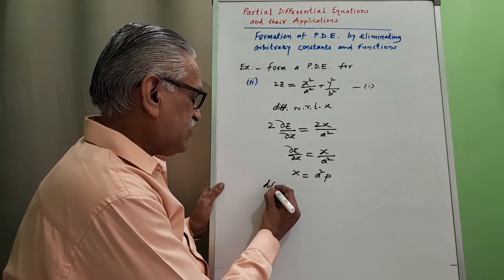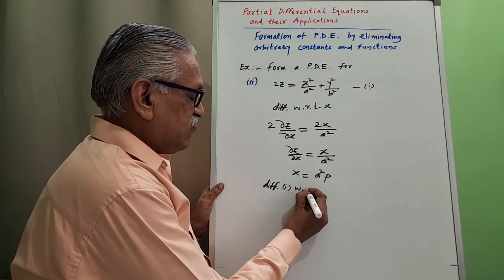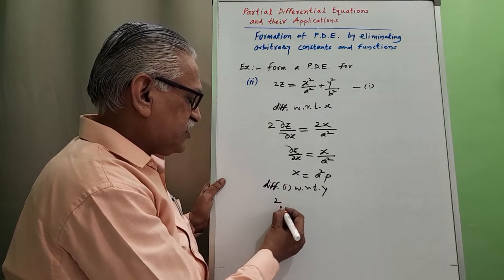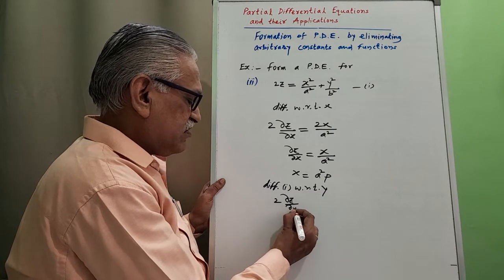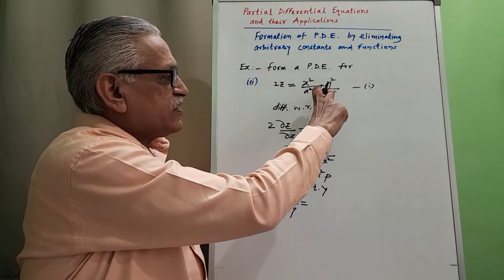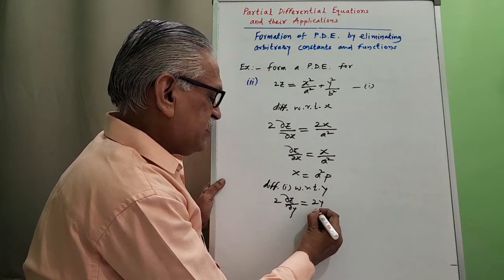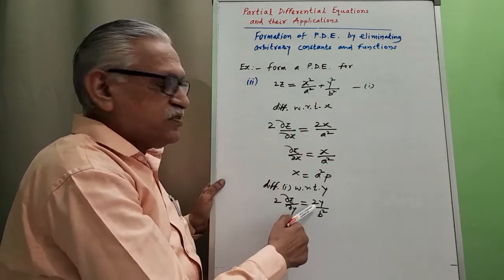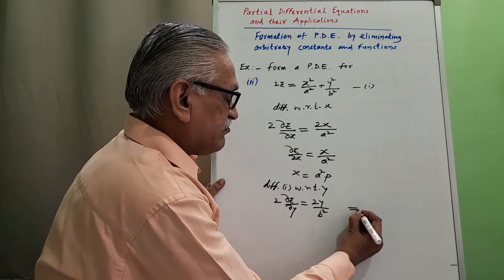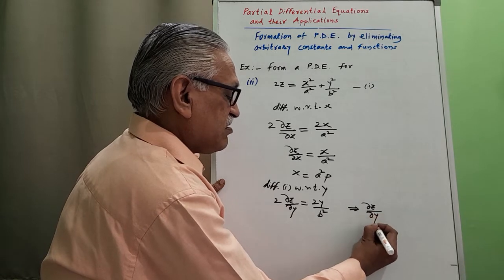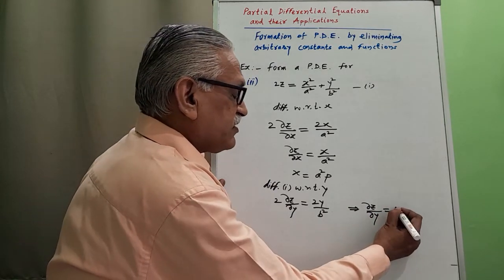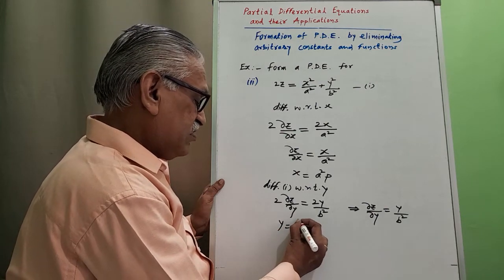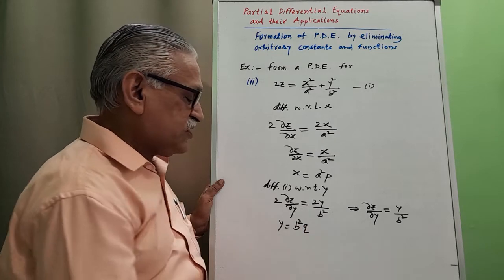Then differentiating equation 1 with respect to y, keeping x constant: 2·(dou z by dou y) equals 2y/b², so the 2s cancel and dou z by dou y equals y/b². This gives b² equals y/q, or y equals b²·q.